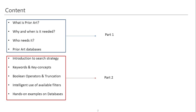In any research or Prior Art search, developing a search strategy is very crucial. A good search strategy always delivers relevant results. In this session, we will have a basic introduction about search strategy, how to develop keywords and key concepts, Boolean operators and truncation operators available for these databases, how to use filters to get more relevant results, and how to implement these strategies on Prior Art databases.